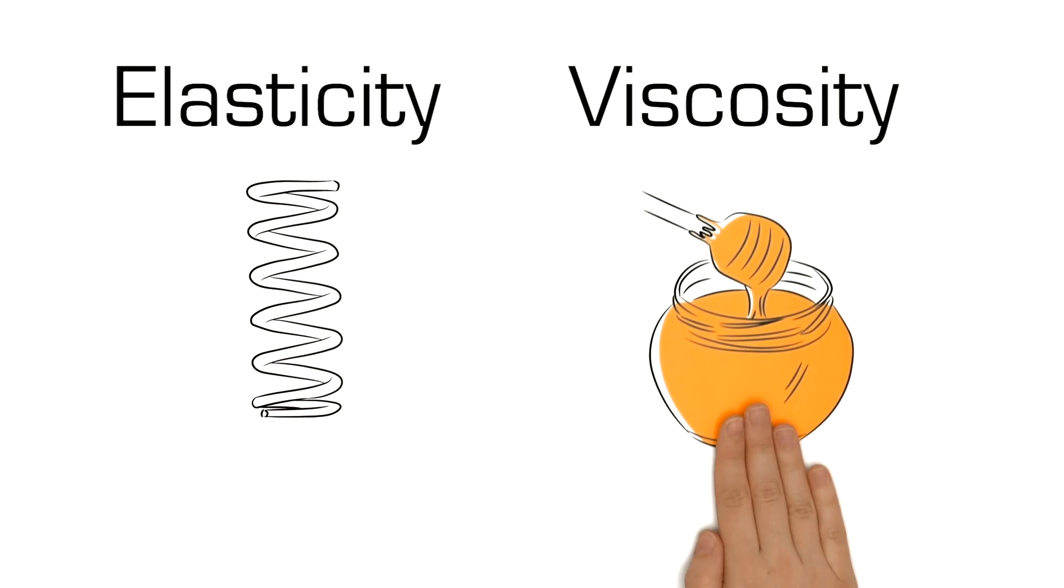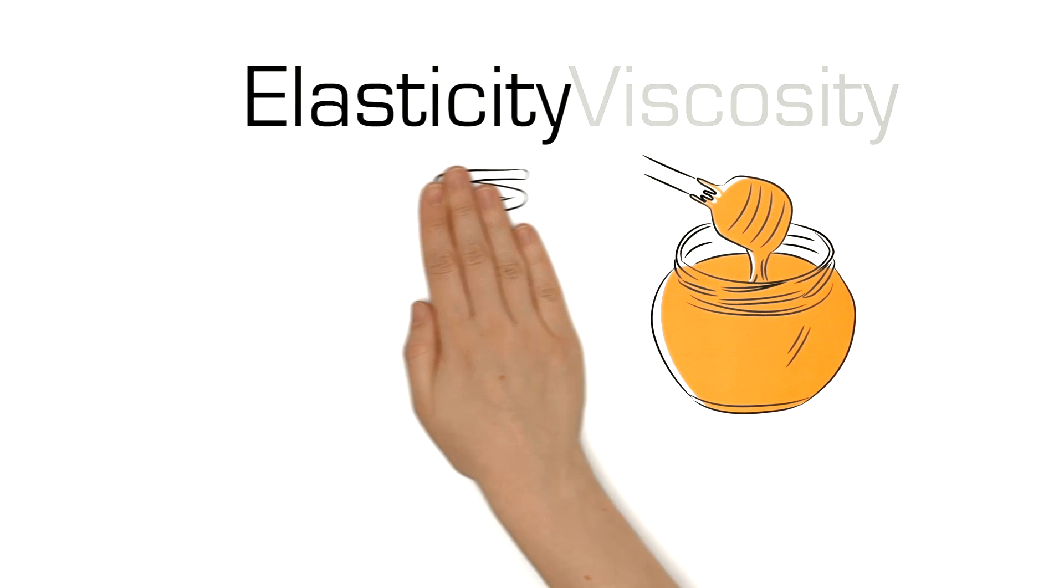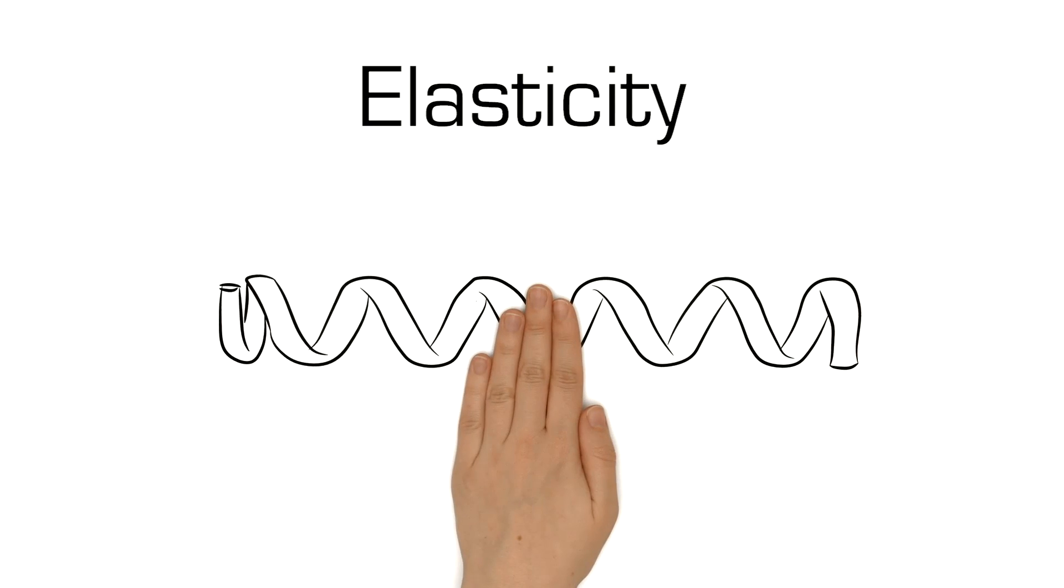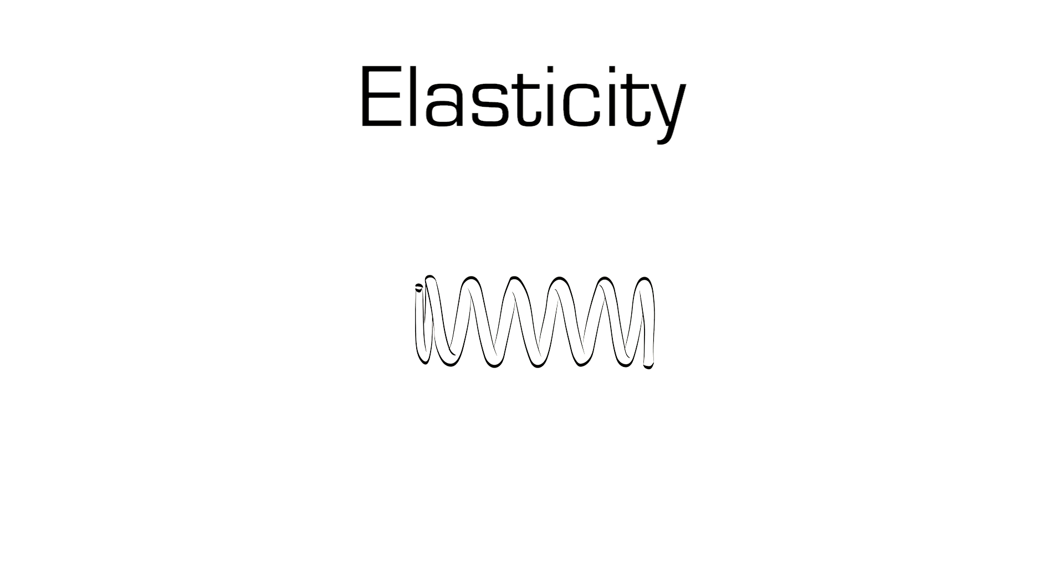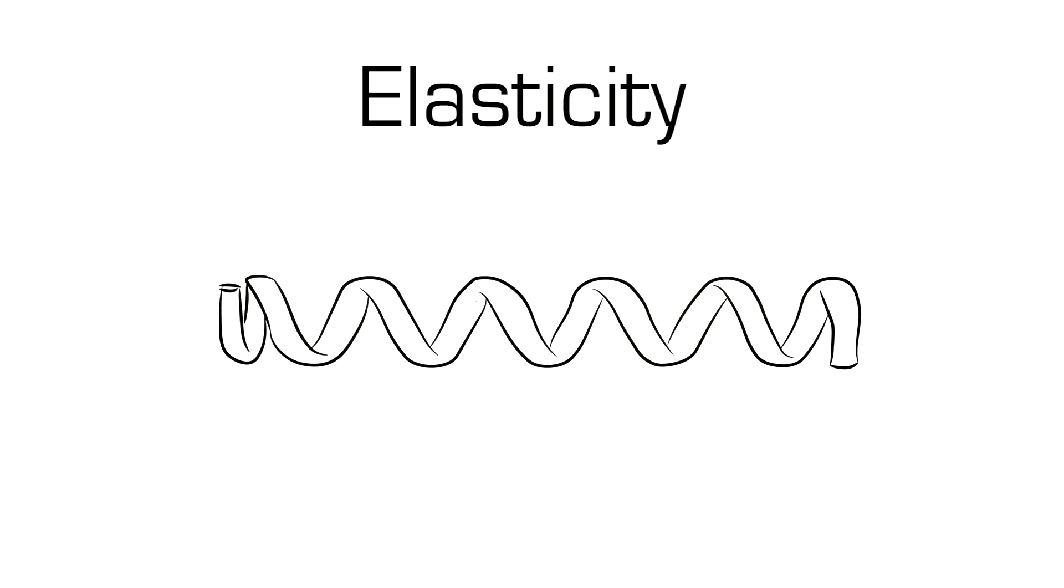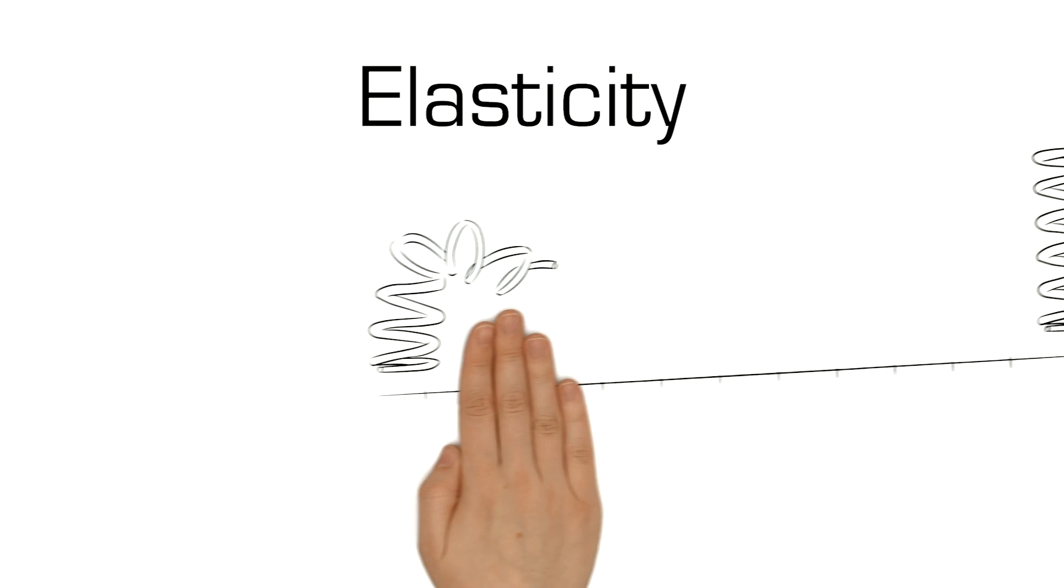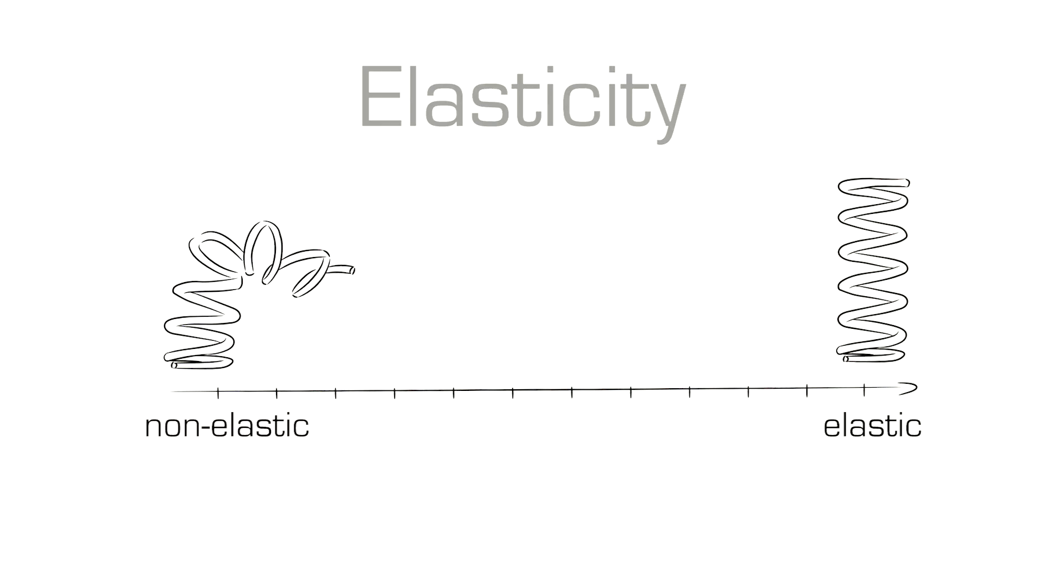A distinction is made between elastic and viscous properties. Elasticity is the ability of a body to return to its original size and shape after using force, like a spring. The more elastic a body, the better it is at doing this.